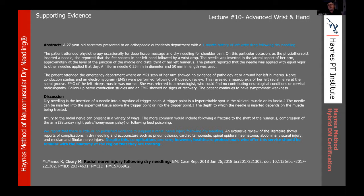Normally I give out positive, uplifting content — dry needling is great — but we have to be aware that there are complications. As we get into the wrist and hand, our window of action gets even smaller. Being aware of where the median nerve travels through the carpal tunnel gives us a good idea of where we need to go and where we don't. We need to be cautious about our spacing and location, using our finger breadths and surface anatomy to know exactly where we're advancing these needles.